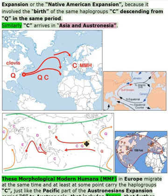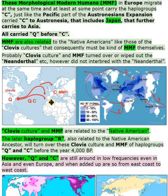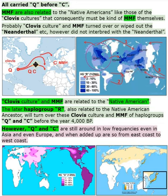MMF are also related to the Native Americans, like those of the Clovis culture, who consequently must be MMF themselves. Probably Clovis culture and MMF turned over or wiped out the Neanderthals, but did not interbreed with them. The later haplogroup R, also related to the Native American ancestor, will turn over these Clovis culture and MMF of haplogroups Q and C before the year 4000 BP.